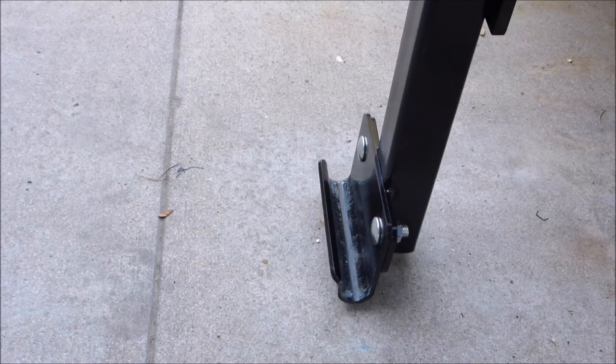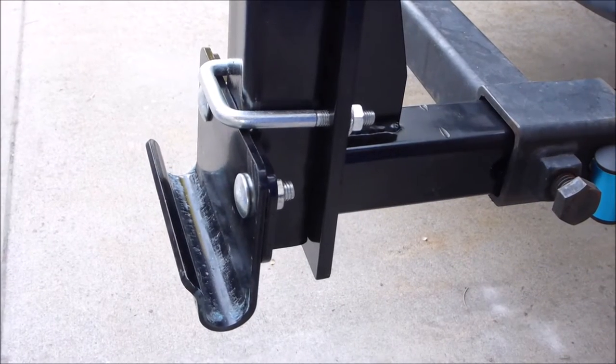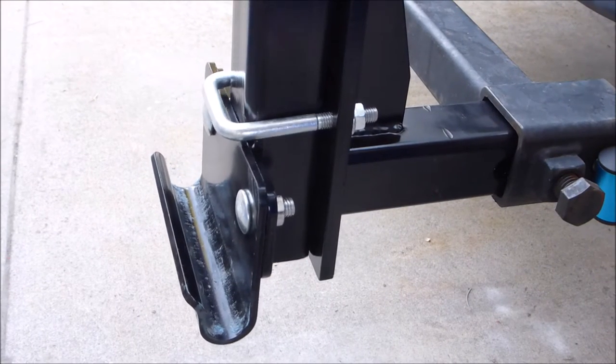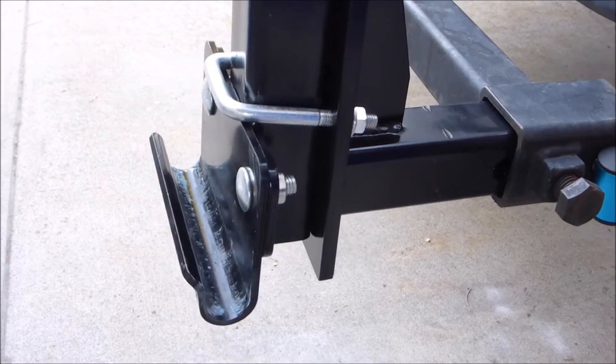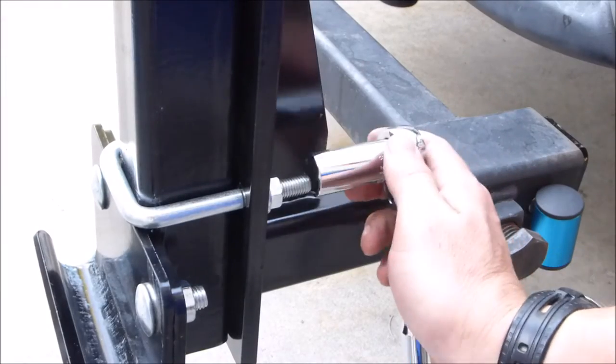Now we're going to pull this part up. My truck is pretty low to the ground, so I'm going to pull it up to the highest point. You can adjust it according to your truck and lower it or raise it. I'm using a 5/8 socket and I'm going to tighten it up.